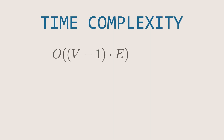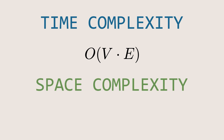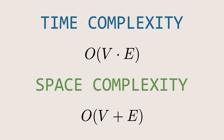The algorithm goes through all the edges V minus one times to perform relaxation, and one more time to check for negative weight cycles, so the total time complexity is O of V times E. The algorithm uses space to keep track of the costs and previous node information, which depends on the number of nodes. It also needs space to store the graph, which is proportional to the number of nodes and edges. So the total space complexity is O of V plus E.